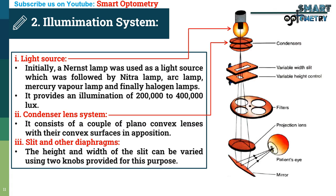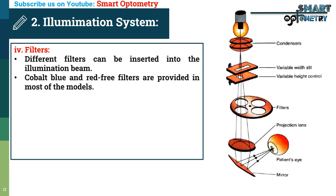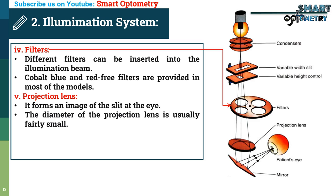Slit and Other Diaphragms: The height and width of the slit can be varied using two knobs provided for this purpose. By moving the slits, we can increase or decrease the length and width of the slit. Filters: Different filters can be inserted into the illumination beam. Cobalt blue and red-free filters are provided in most models. Projection Lens: It forms an image of the slit at the eye. The diameter of the projection lens is usually fairly small.